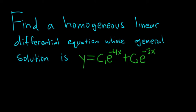Find a homogeneous linear differential equation whose general solution is given by y equals c1 e to the negative 4x plus c2 times e to the negative 3x. Okay, let's go ahead and work this out. So we're given the general solution.